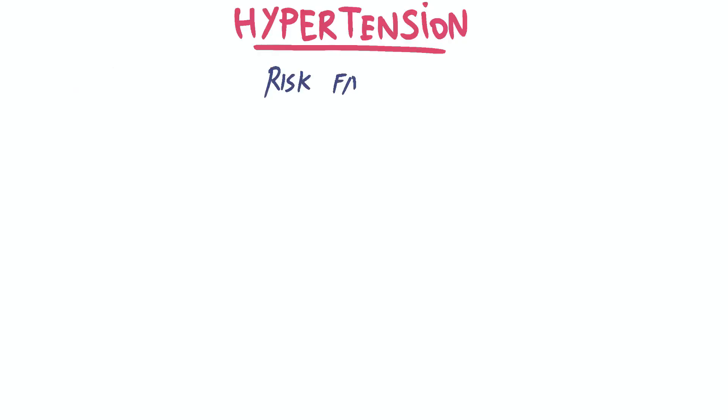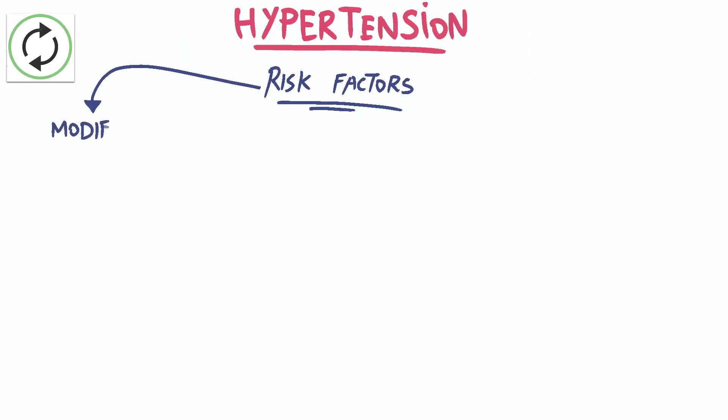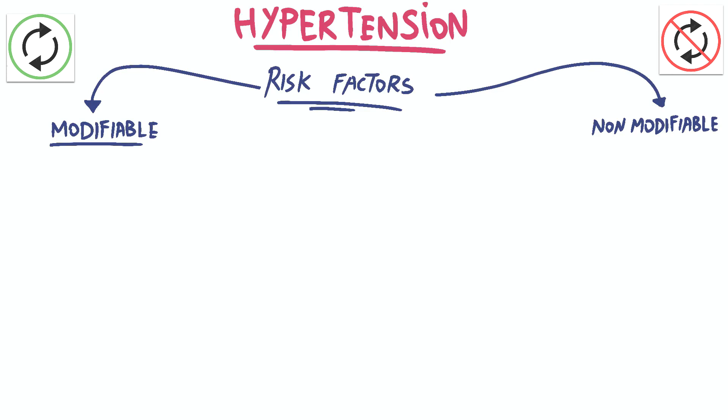There are various risk factors that can contribute to hypertension. These factors can be categorized into changeable and non-changeable factors. Modifiable factors are those that can be changed or controlled, while the others are inherent and cannot be changed.